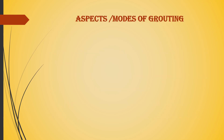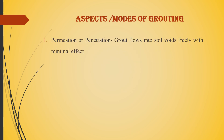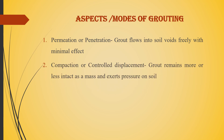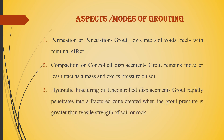There are basically three aspects or modes of grouting. The first is permeation or penetration grouting, where the grout flows into the soil voids freely with minimal disturbance. The second is compaction or controlled displacement, where the grout remains more or less intact as a mass and exerts pressure on the soil. The third is hydraulic fracturing or uncontrolled displacement, where the grout rapidly penetrates into a fractured zone created when grout pressure exceeds the tensile strength of the soil or rock.